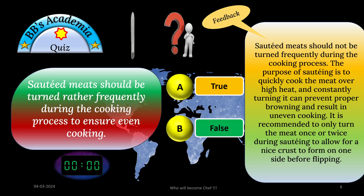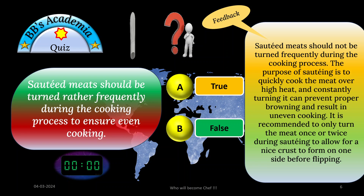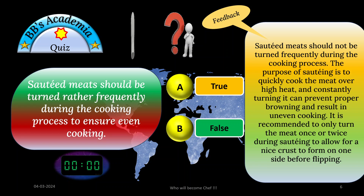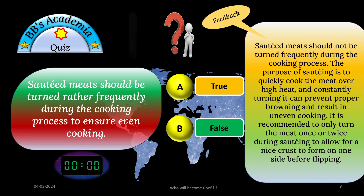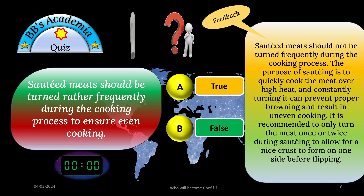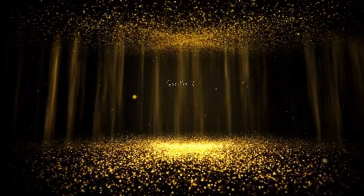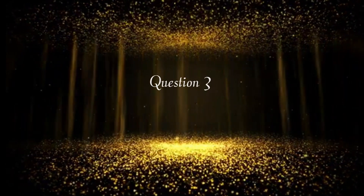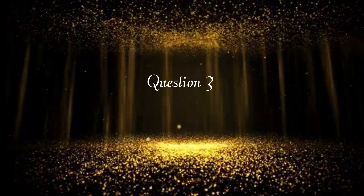So whenever you are sautéing, never turn the meat very frequently. Wait for sufficient time so that a crust forms, then flip it and create a similar crust on the other side — that will give you even color and ensure even cooking. I congratulate those with correct answers, and for the rest, please note it down. Let us proceed to question number 3.